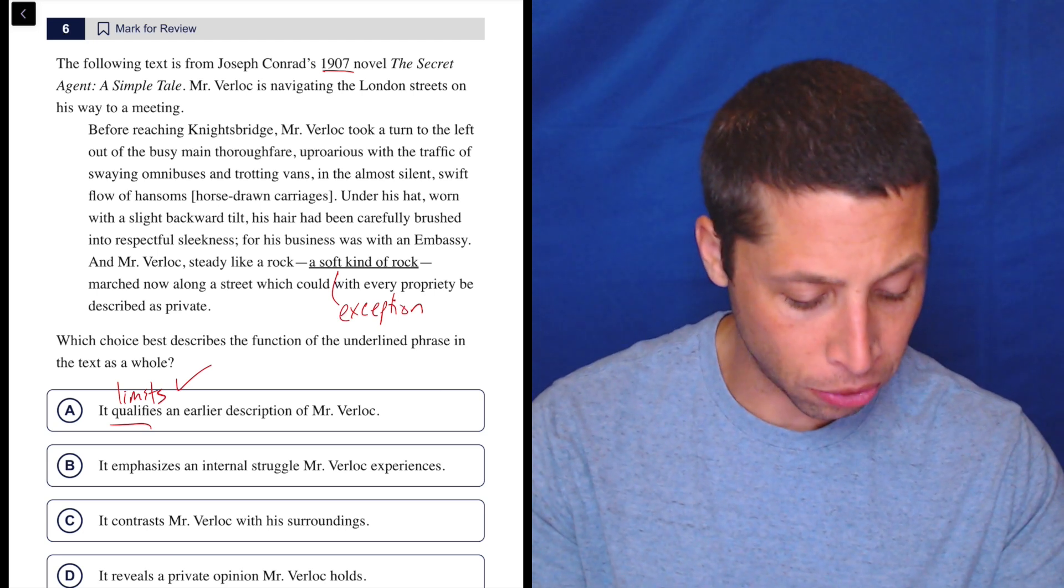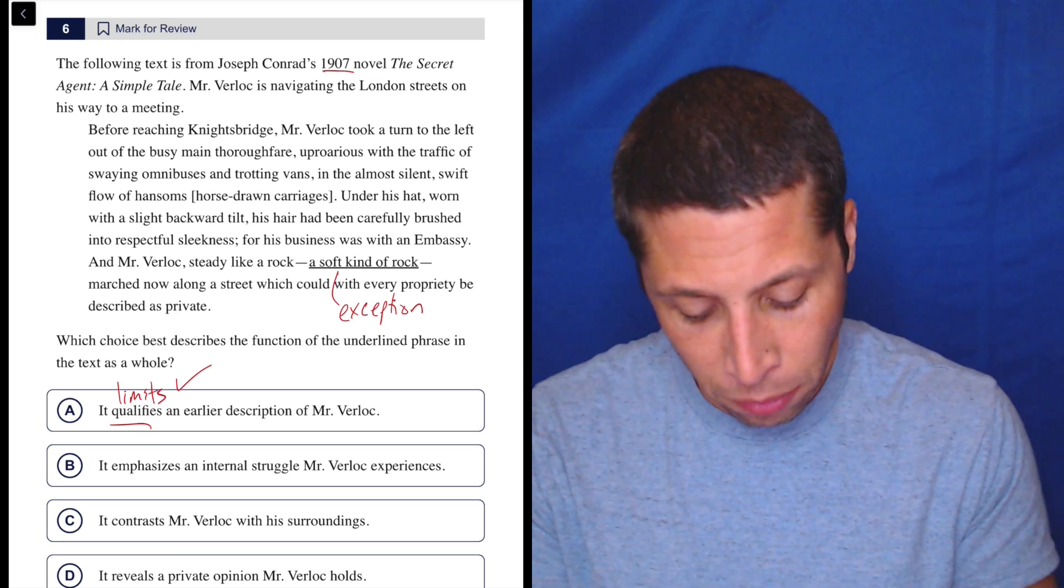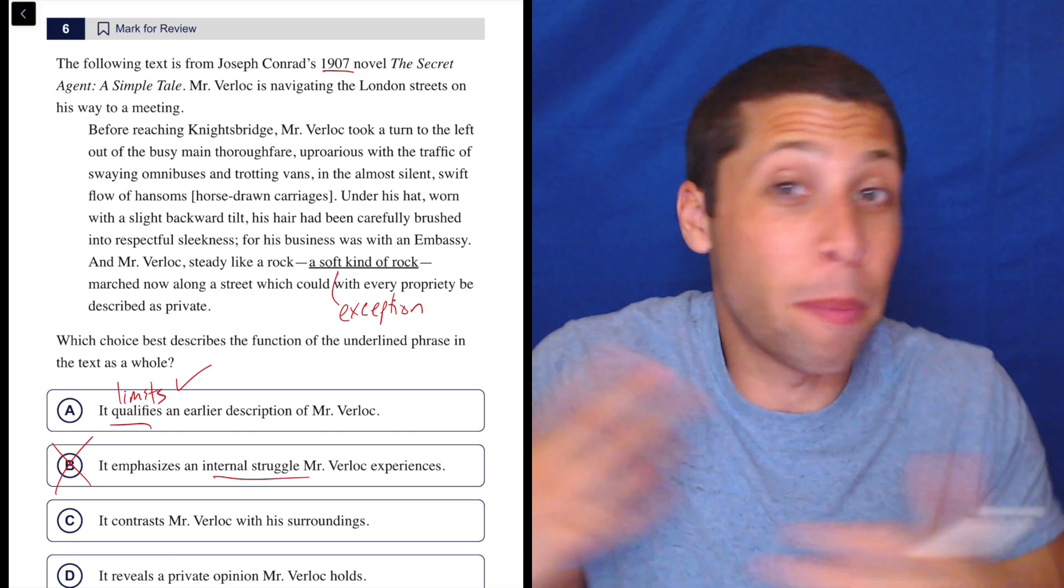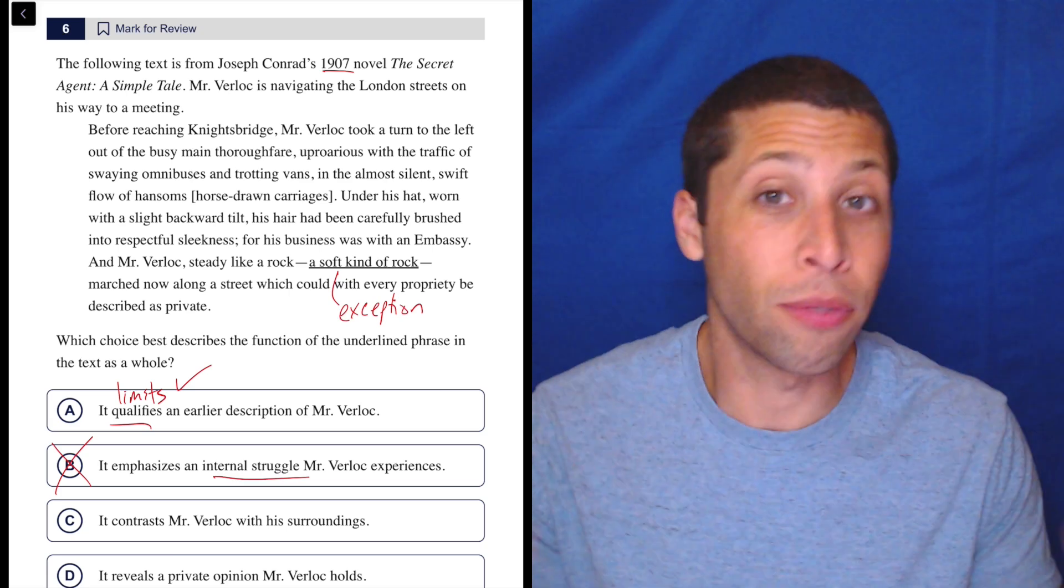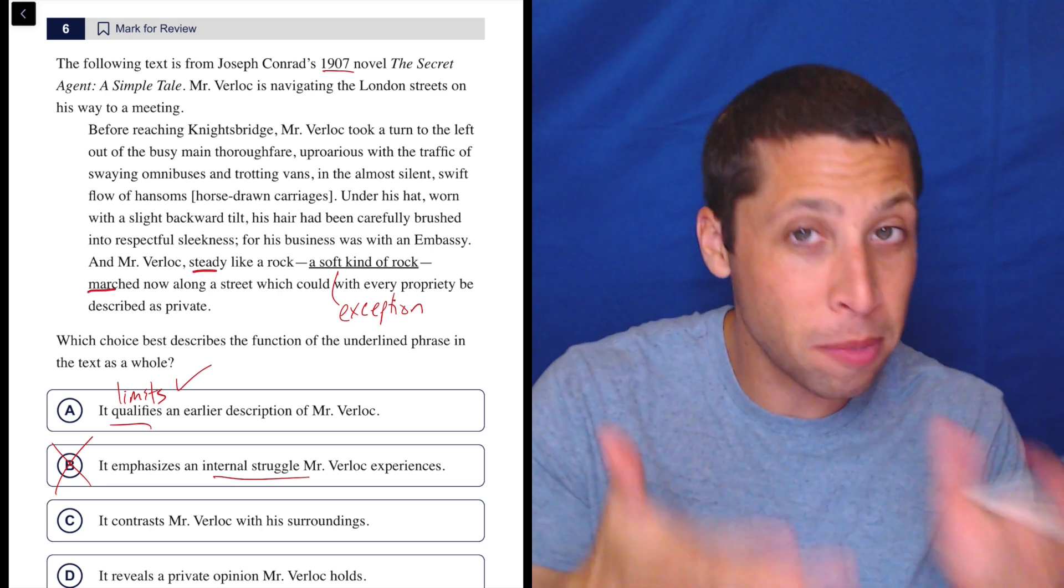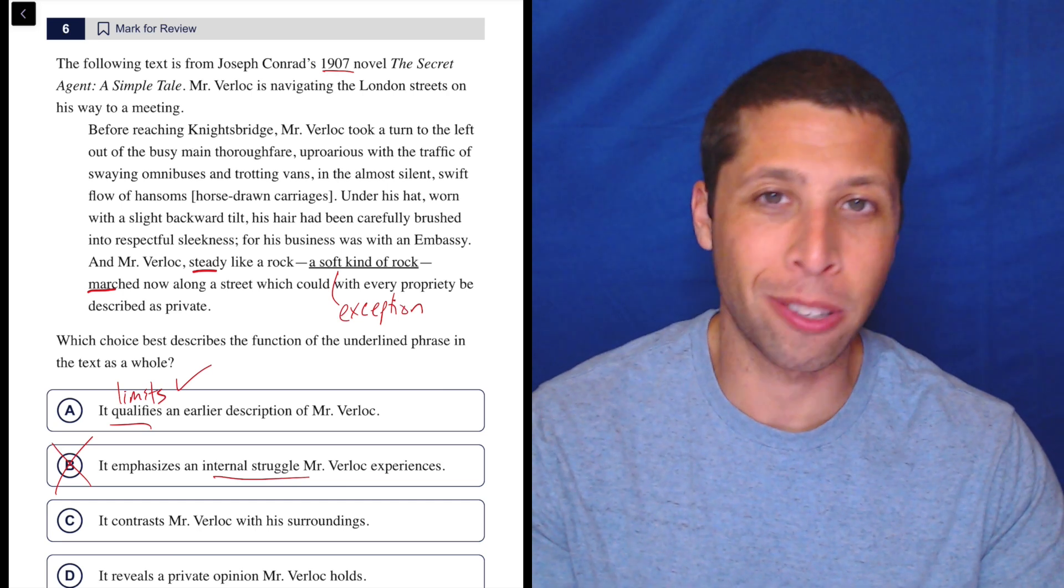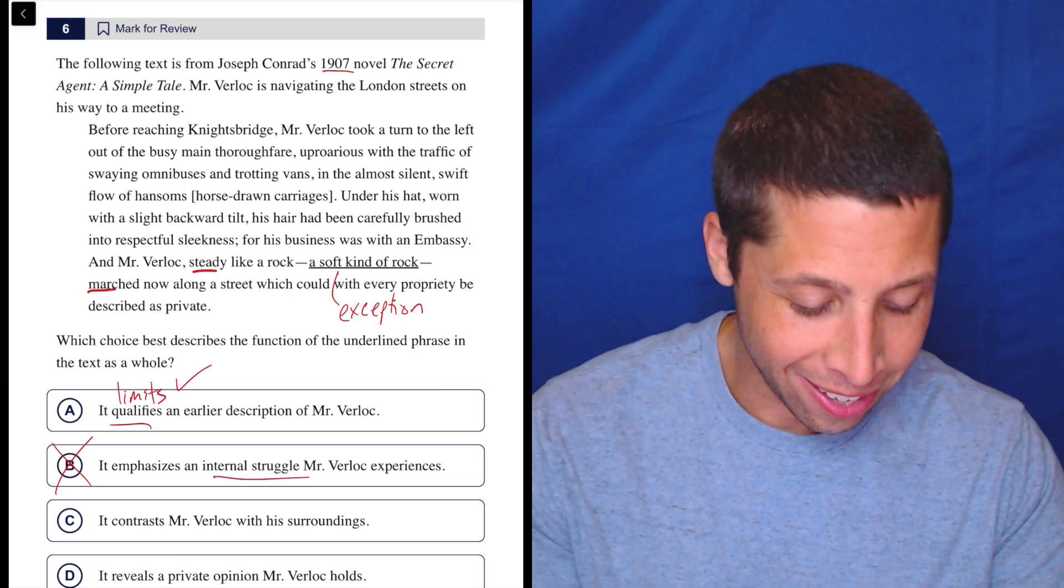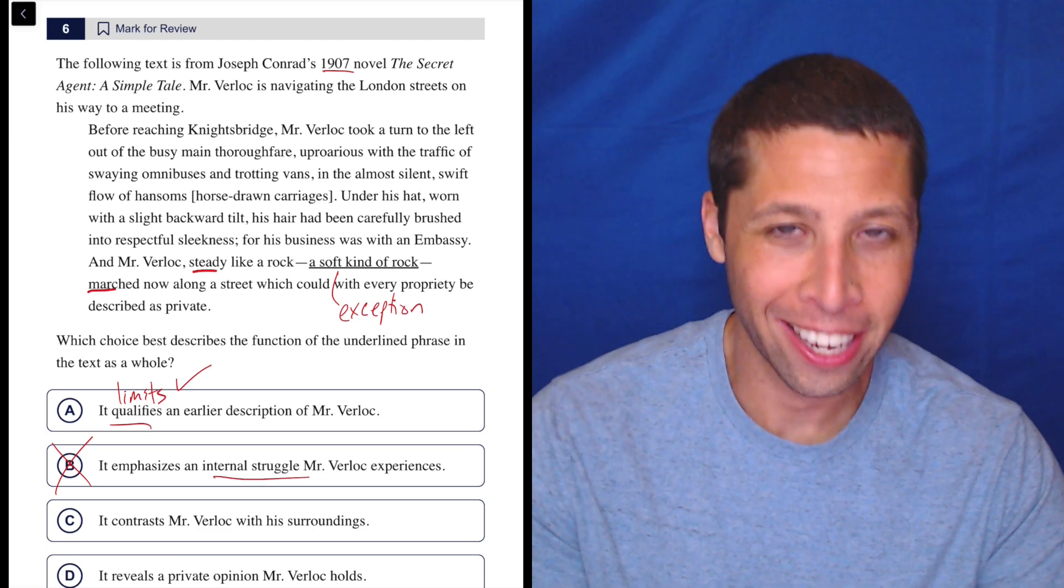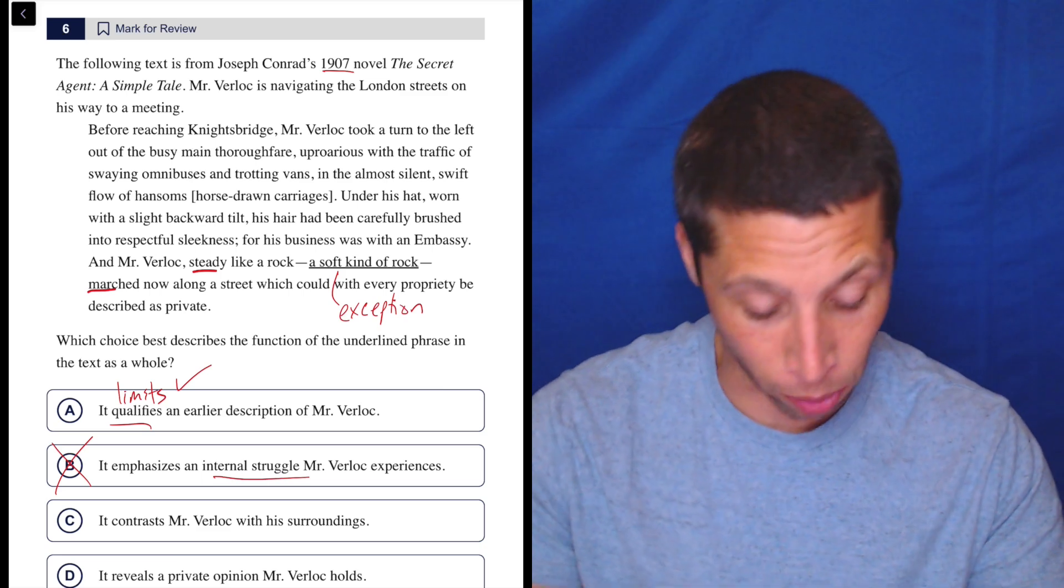B, it emphasizes an internal struggle Mr. Verloc experiences. What? That little thing, a soft kind of rock, is an internal struggle? Now, some of you are going to try to turn this into like a metaphor. Okay, it's a soft rock because he's like hard, but he's also like debating within himself whether he's a hard rock or a soft rock. And he's really conflicted about it. What are you talking about? It says he's steady like a rock. I mean, he's marching. He seems to be moving with intent here, not with conflict. So even if we could maybe pull out some sort of uncertainty from these lines, a soft kind of rock is not enough to justify that. So don't get all metaphorical. Don't get all symbolic. The lines are going to tell us what they mean. So we need hard evidence. We shouldn't have to interpret this in any deeper way. This is definitely a trap.